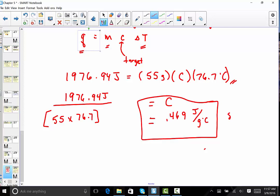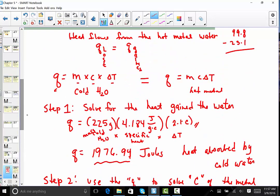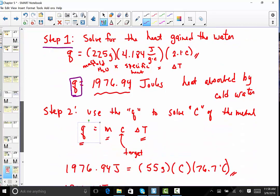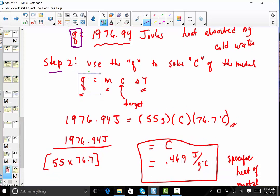This is the specific heat of our metal. Two steps we followed. Step 1. In step 1, we used all the information about the cold water and solved for Q. M, C, delta T for your cold water. Step 2, we used that answer for the Q, the heat lost by the metal. We knew its mass. We knew its delta T. And we pulled out the specific heat of the metal.